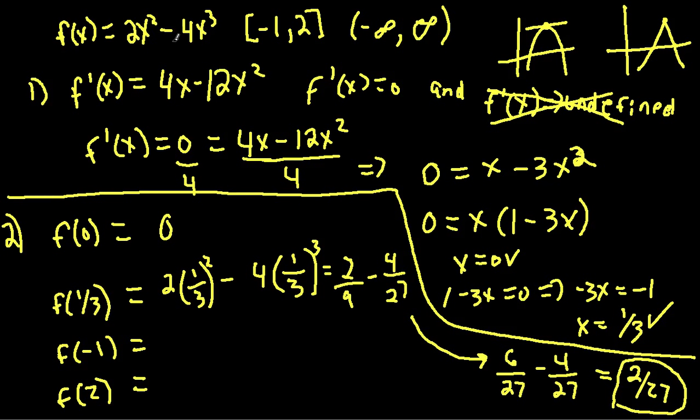So we need to evaluate this now for negative 1. So negative 1 squared is 1, so 2 times 1 is just 2, minus negative 1 cubed is negative 1, but a negative multiplied by this negative 4, so we're left with plus 4, which is equal to 6.